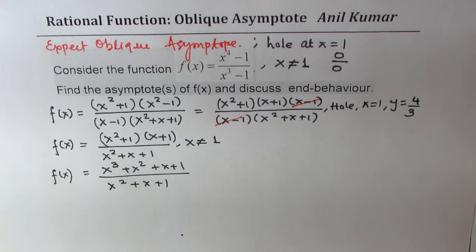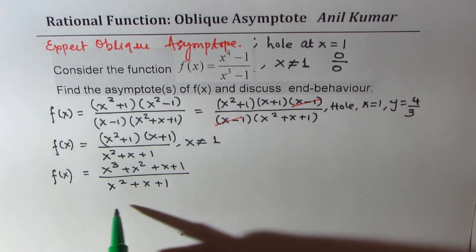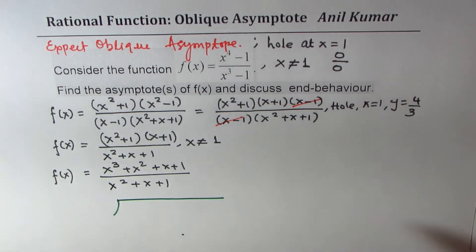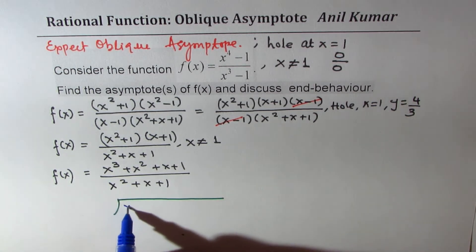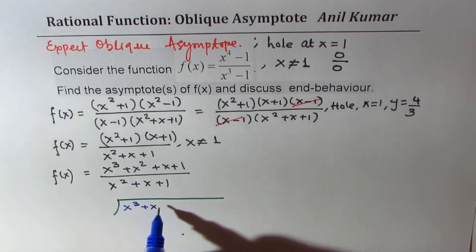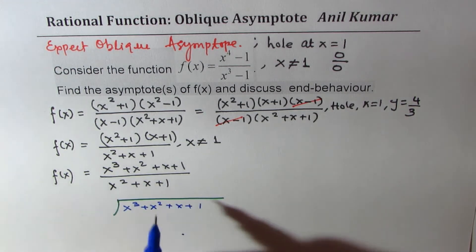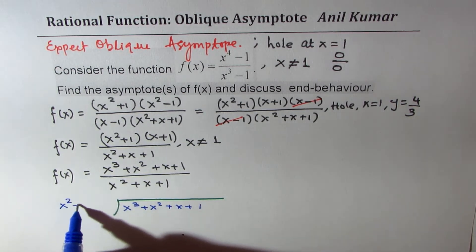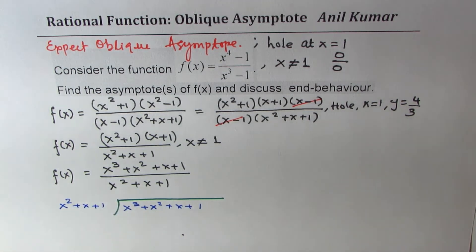Now, to get the asymptote, we'll divide. Let me use this space itself. And we'll divide the numerator, which is x cubed plus x squared plus x plus 1, by x squared plus x plus 1.